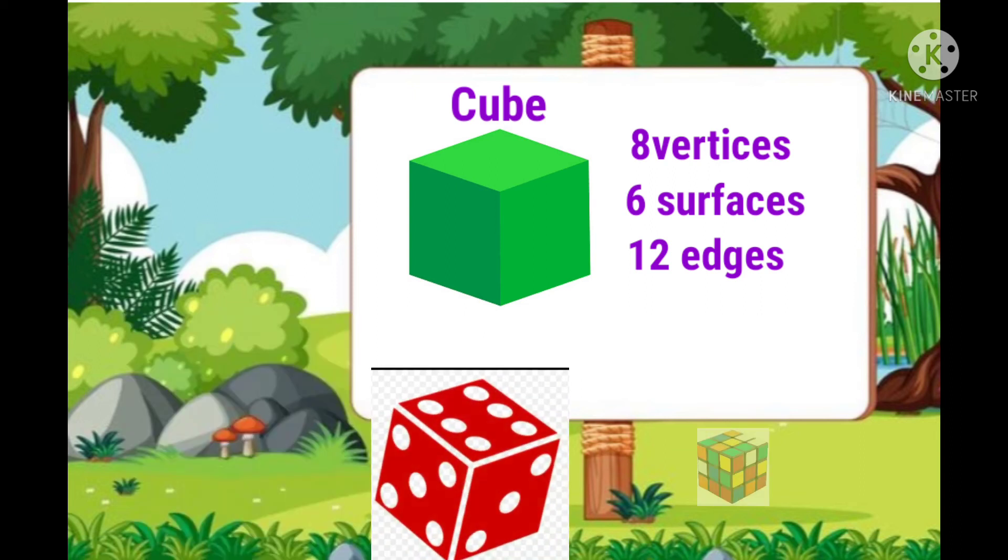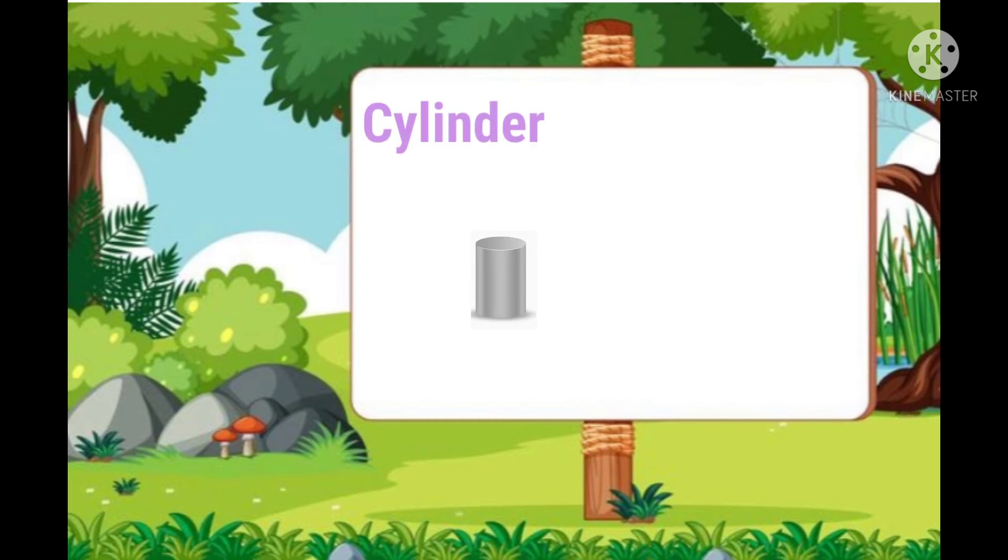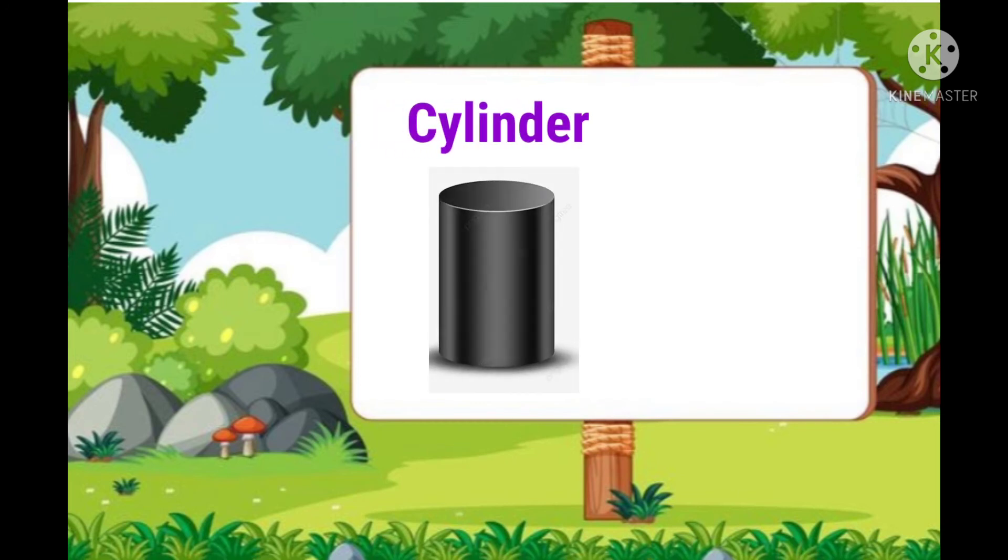Dice and Rubik's cube are the examples of cube. Next, cylinder. Some objects have the shape of a can. We call this shape a cylinder.